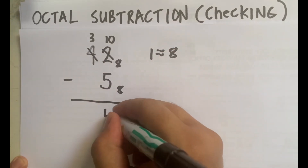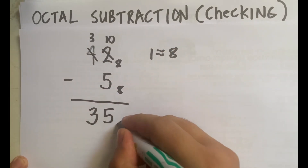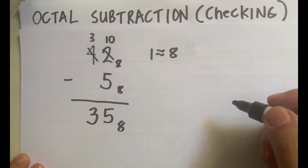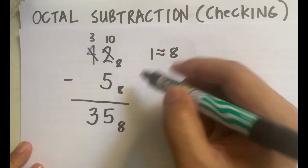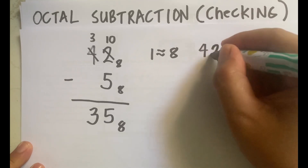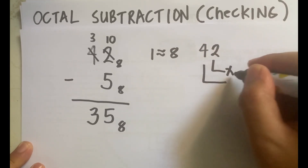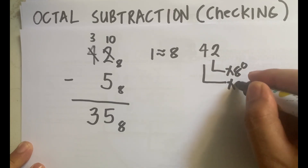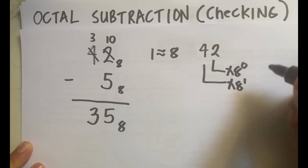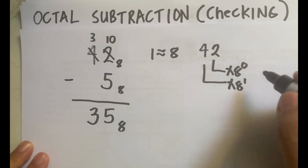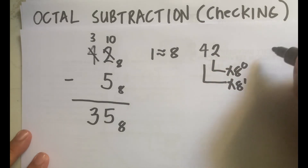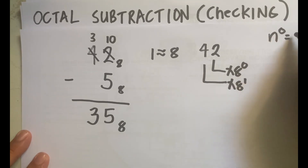Continuing: 10 minus 5 is 5, bring down 3, answer is 35. To verify, we convert to decimal by multiplying each digit by powers of 8, starting from 8 raised to 0, then 8 raised to 1, 8 squared, 8 cubed, and so on, depending on the number of digits. Remember: any number raised to 0 equals 1, and any number raised to 1 is the number itself.